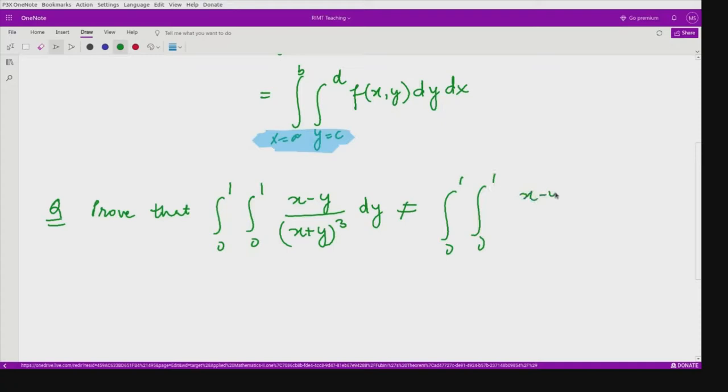...this is not equal to integration from 0 to 1, integration from 0 to 1, (x-y)/(x+y)³ dx dy. Here it is dy and dx and here it is dx and dy.